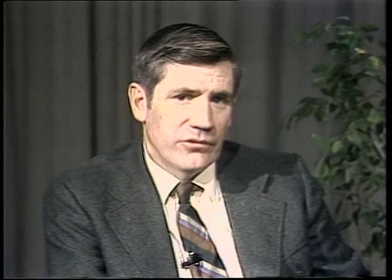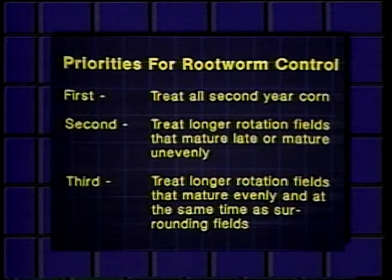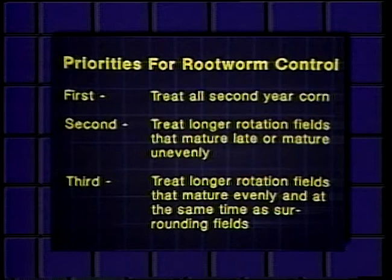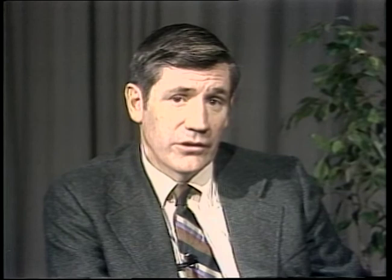If you haven't scouted for rootworm adult beetles and aren't sure whether economic populations are present, it's best to treat all of your continuous corn fields. However, if you lack the funds to do so, the following guidelines may help. First, all your second-year fields should be treated with a rootworm insecticide. The second priority is longer rotation fields that mature late or unevenly. Fields that mature evenly at about the same time as surrounding fields are at the least risk. If you can't afford to treat all continuous corn, I suggest prioritizing your needs along these lines.